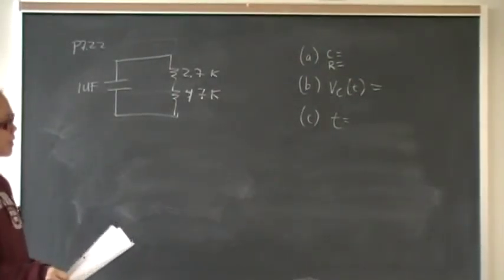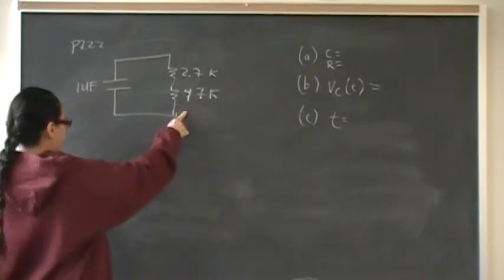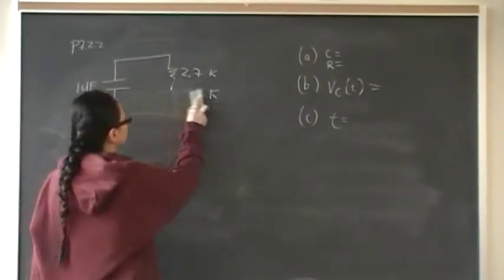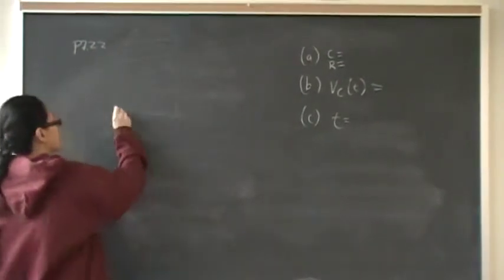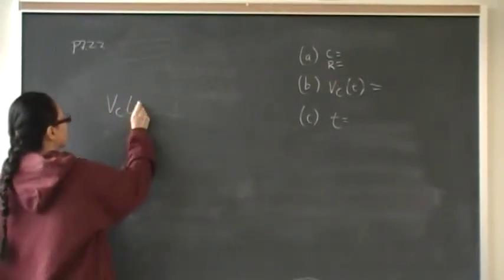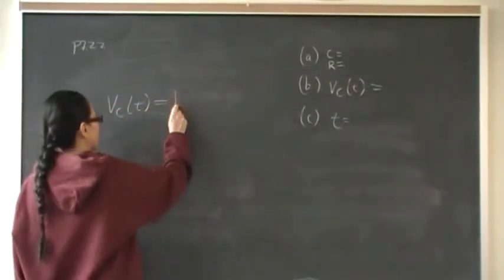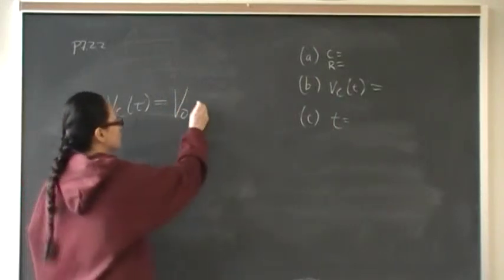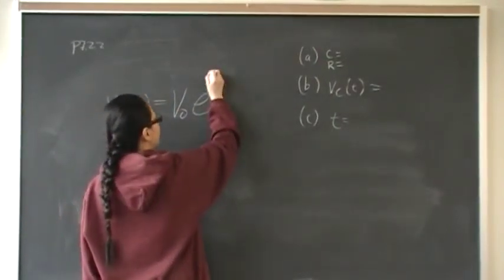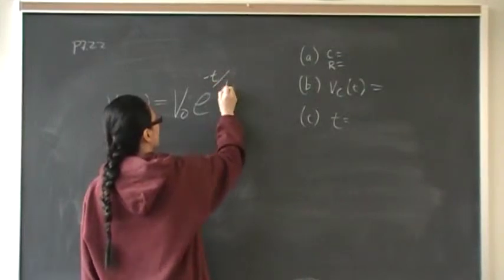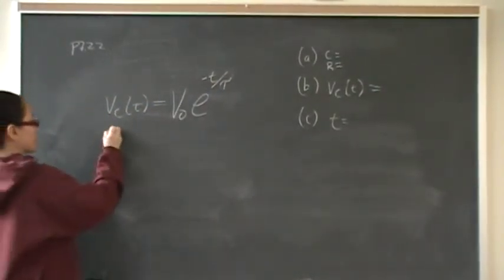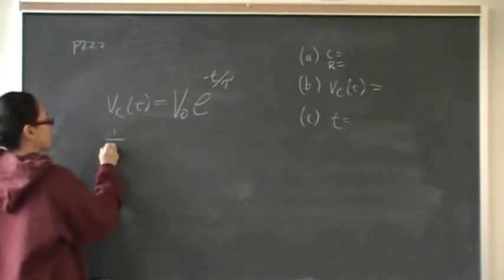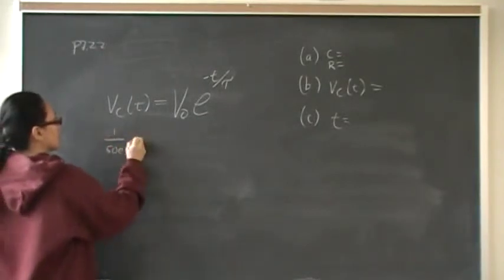For part B, we're going to find the general equation. So I'm going to pretend that I've got exactly 50K from part A. Just remember that the general equation for a capacitor, the natural response of the capacitor is going to be the initial voltage, and then that is going to decay at a rate of negative T over tau. Well, we know tau is 50 milliseconds.